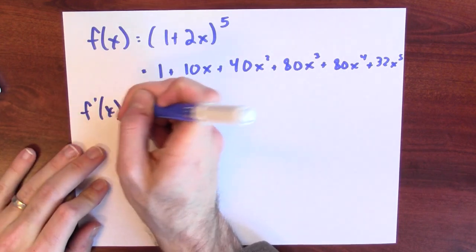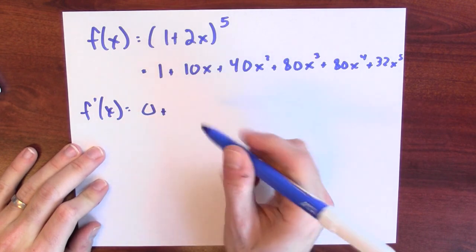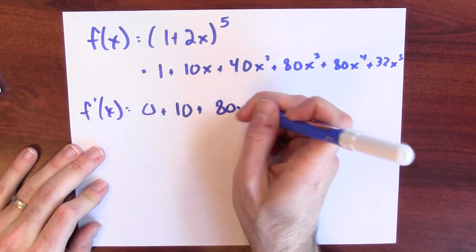Now it's just a polynomial, so I can fearlessly differentiate it. So f prime of x, if I differentiate this, the derivative of 1 is 0. The derivative of 10x is 10. The derivative of 40x squared is 80x.